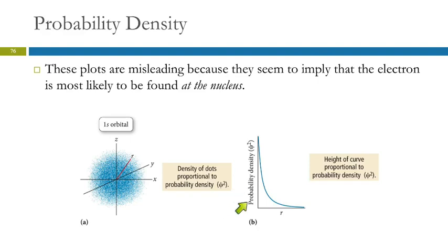If we graph probability density as a function of radius, we get a graph like this, which predicts that the highest probability is going to be at the nucleus. But we know that the electron cannot be at the nucleus, or the atom would collapse. So there's something missing in this idea.